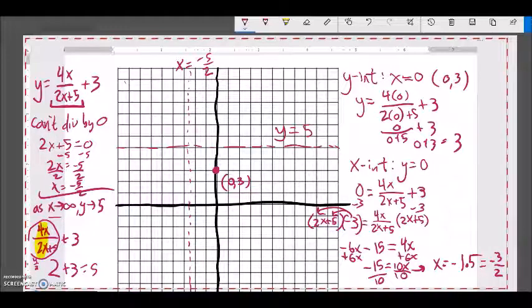So when y is zero, x is negative 3 halves. So x is negative 3 halves, y is zero. So there's my x intercept. So 3 halves is about 1.5. Not about, it is exactly 1.5. So I have this negative 3 halves, zero.